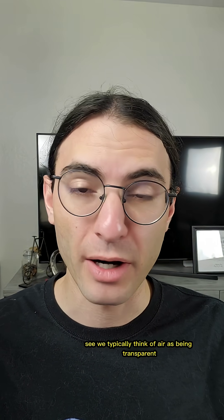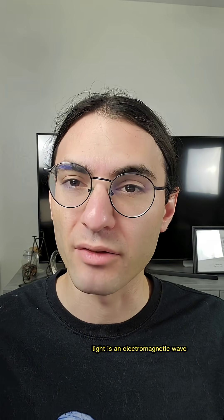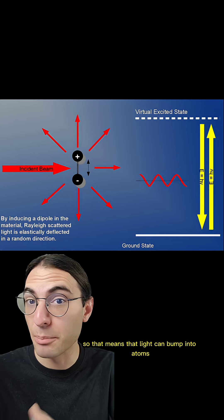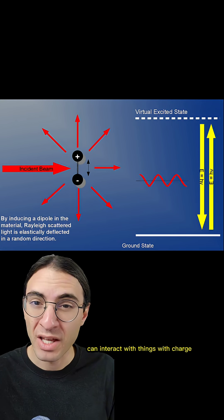See, we typically think of air as being transparent, and to a certain extent, it is. But at the end of the day, light is an electromagnetic wave, and air is made of atoms which have electric charge. So that means that light can bump into atoms, since electromagnetic waves can interact with things with charge.